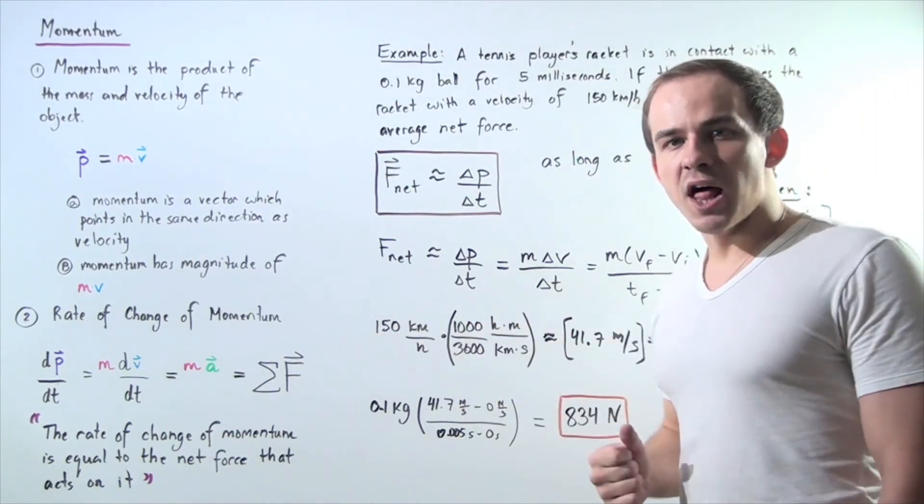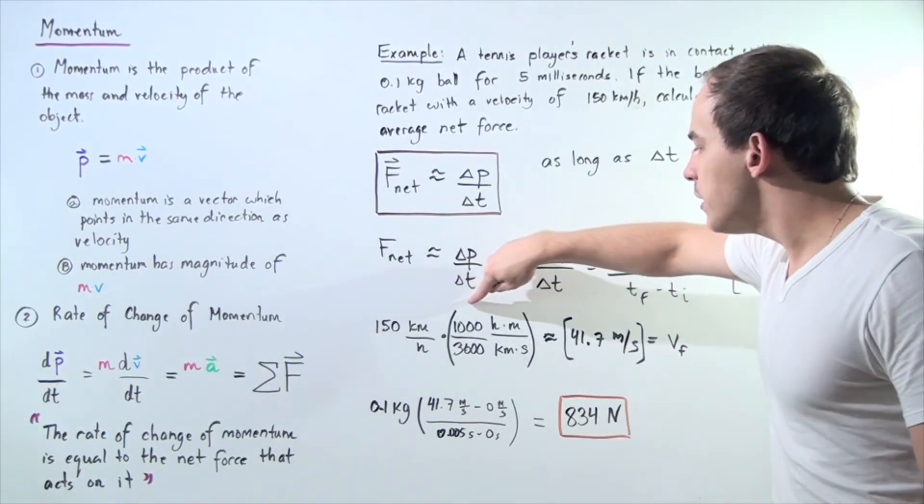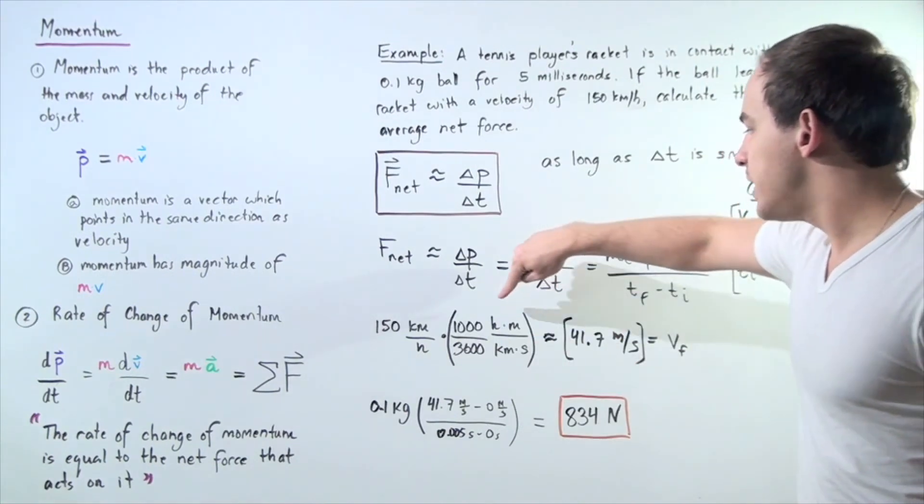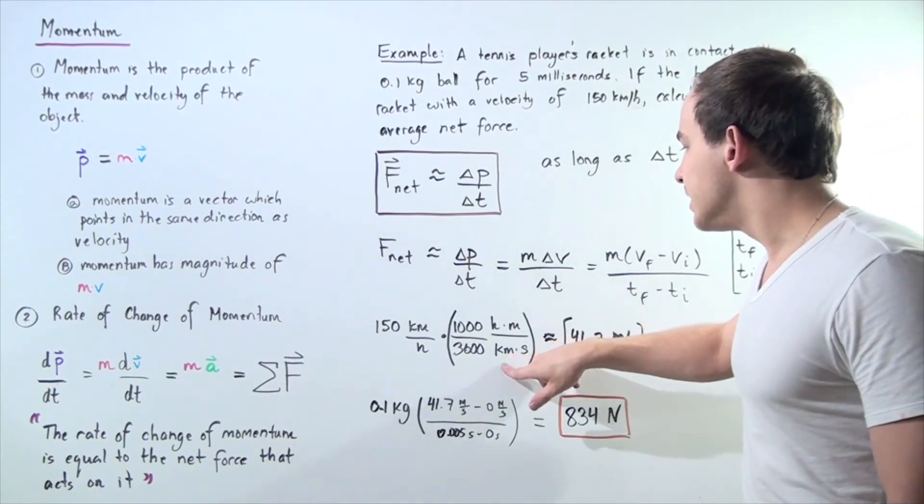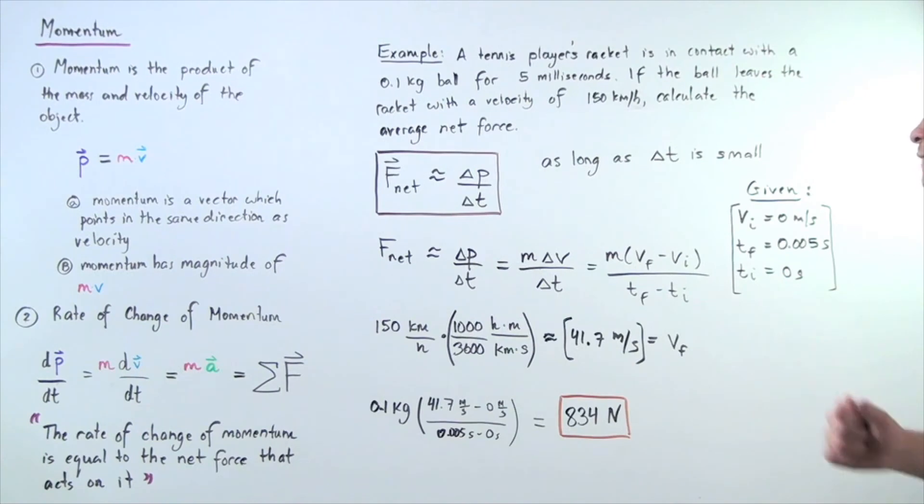Let's convert 150 kilometers an hour to meters per second by multiplying it by 1,000 divided by 3,600. We have hours times meters divided by kilometers times seconds. So kilometers cancel, hours cancel, and we're left with approximately 41.7 meters per second is our final velocity.